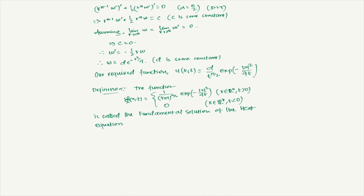This is clear because we chose U to be t^(−α) with α = N/2, giving 1/t^(N/2). And V = W(|x|/t^β) with β = 1/2 gives exp(−|x|²/4t), where R = |x|. So this is the fundamental solution of the heat equation, and it is the basis of much analysis in harmonic analysis theory.